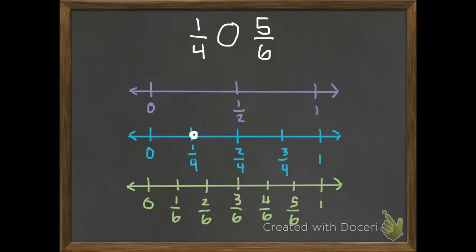I know that one-fourth is less than half, and five-sixths is more than half. Using that one-half, it's easy to tell that if one is less than half and one is more than half, that the one that's more than one-half is going to be the greater fraction. Five-sixths is going to be more than one-fourth, or is greater than.